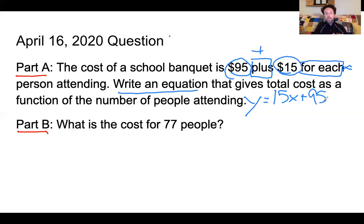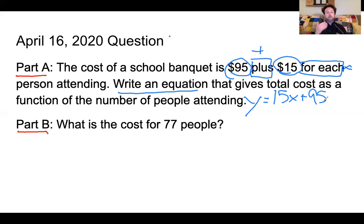We can't have negative people. It starts at zero and goes up from there. So if nobody shows up, the cost is $95 just to rent the space. But depending on how many people attend, it's $95 plus a number that changes with the amount of people that show up.